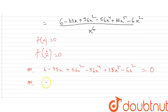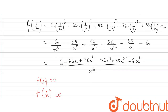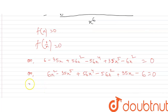If we rearrange this equation, we get 6x⁶ minus 35x⁵ plus 56x⁴ minus 56x² plus 35x minus 6 equals 0. This is exactly equal to what was given to us, that is f(x) equals 0. So it is proved.